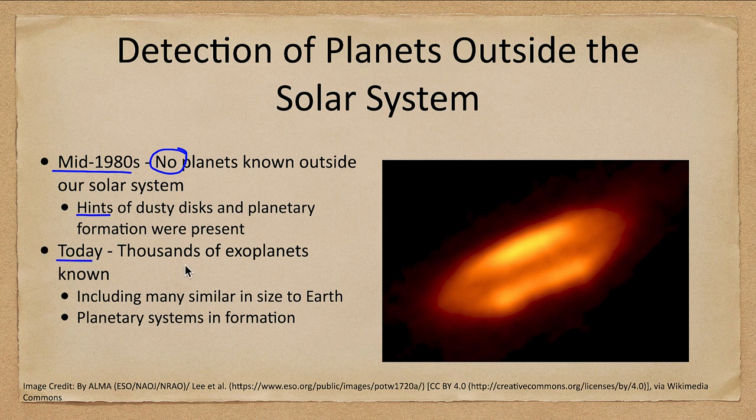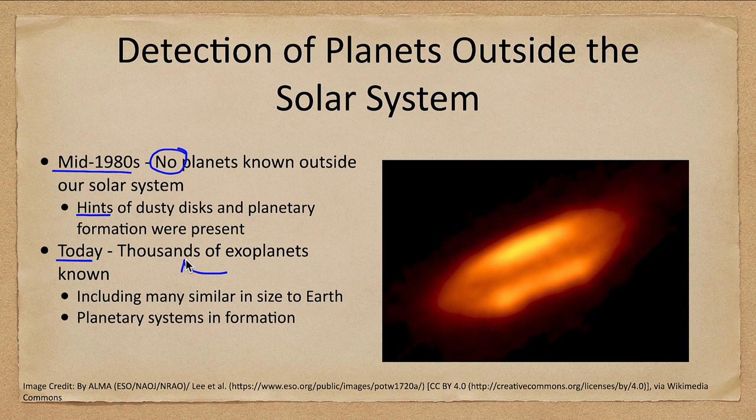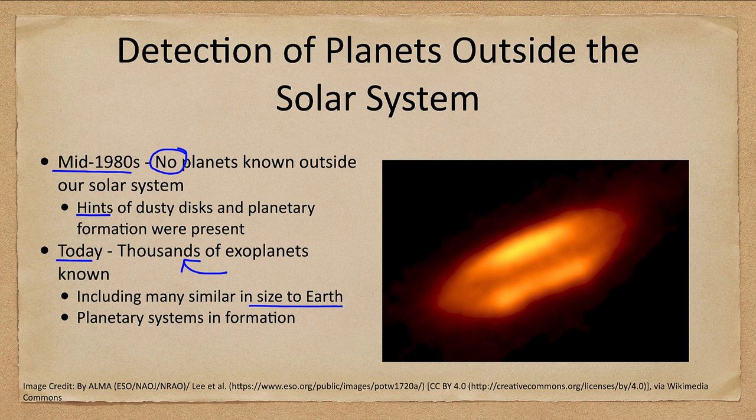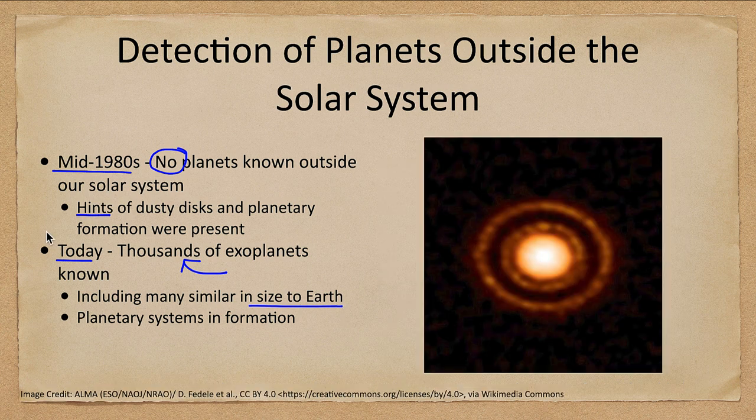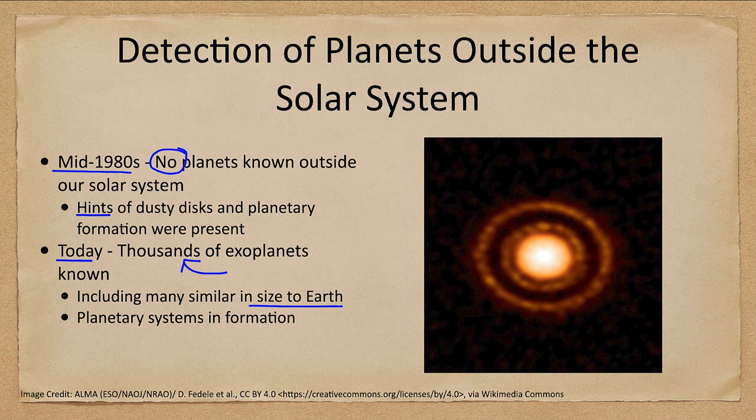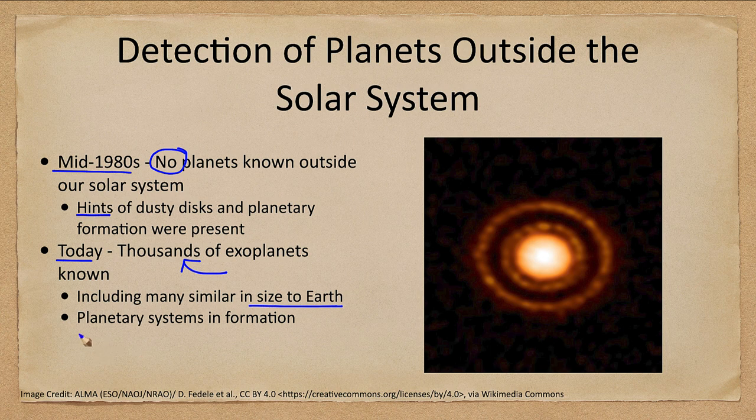Today we know of thousands of exoplanets, thousands of planets outside our own solar system, including many that are similar in size to Earth and even what we believe are likely planetary systems such as this one in the process of formation. Rings of material where planets are forming around a young star.